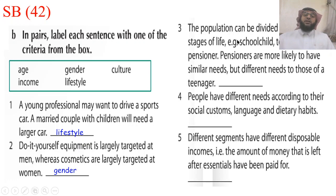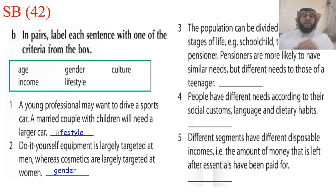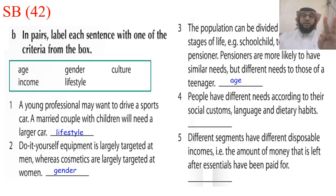Number three: The population can be divided according to the stages of life — مراحل الحياة: school child, teenager, parent, pensioner — متقاعد. Pensioners are more likely to have similar needs but different needs to those of a teenager — تختلف عن احتياجات المراهقين. The answer is age — العمر. Number four: People have different needs according to their social customs — عاداتهم الاجتماعية — language, and dietary habits — عاداتهم الغذائية. The answer is culture.